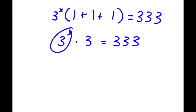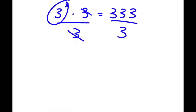So now I obviously want to isolate 3 to the power of x because this is the term that has the variable x that we're solving for. So I want to get rid of this 3, and to do that I'm going to divide both sides by 3. These two 3s simply cancel out and I'll be left with 3 to the power of x is equal to 333 divided by 3, which is 111. So now I have the equation 3 to the power of x is equal to 111.